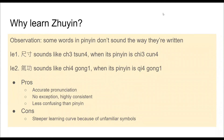So why should we learn Zhuyin? After learning a few Chinese lessons, you'll come to an observation that some words in Pinyin don't sound the way they're written. For example, chi-chun, which means size, sounds like chi-chun when the Pinyin is actually chi-kun. And another example: chi-gong, which is a form of Tai Chi, sounds like chi-gong when the Pinyin is actually chi-gong.